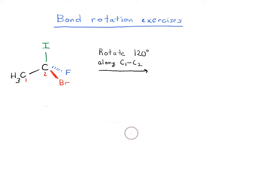All right, try doing this bond rotation exercise. So take this molecule and we're going to rotate carbon 2 along the C1 to C2 axis. Press pause, work on it by yourself, and then when you're ready, you've got an answer, press play.